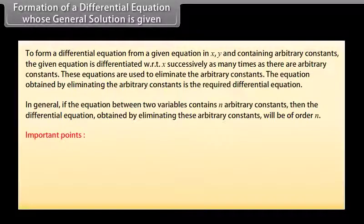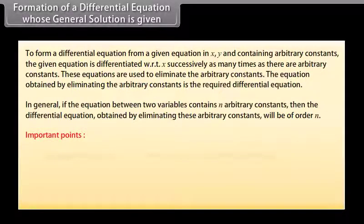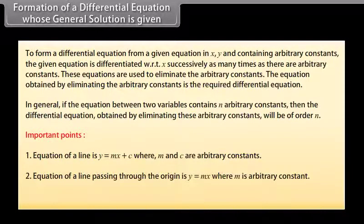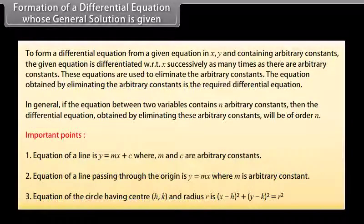Important points: The equation of a line is y = mx + c, where m and c are arbitrary constants. The equation of a line passing through the origin is y = mx, where m is an arbitrary constant. The equation of a circle with center (h, k) and radius r is (x − h)² + (y − k)² = r².